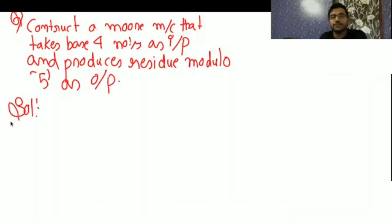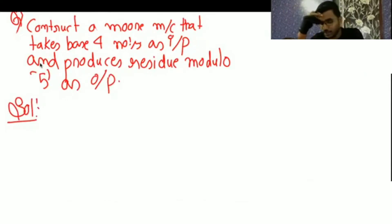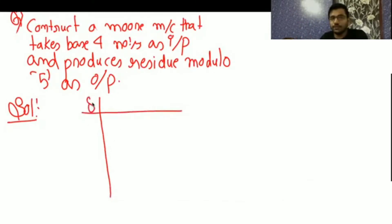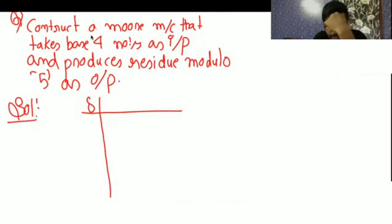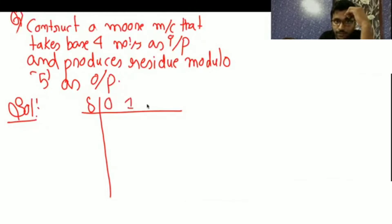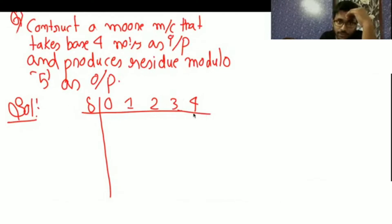When we divide by 5, the remainder will be 0, 1, 2, 3, or 4. The input data comes from this set {0, 1, 2, 3, 4}, and since you are dividing by 5, you will require 5 states: q0, q1, q2, q3, and q4.